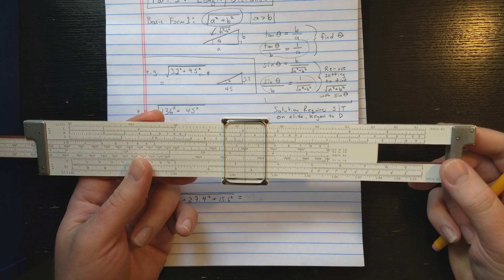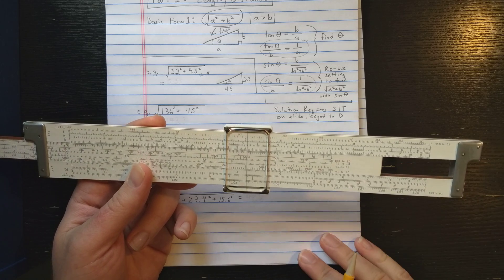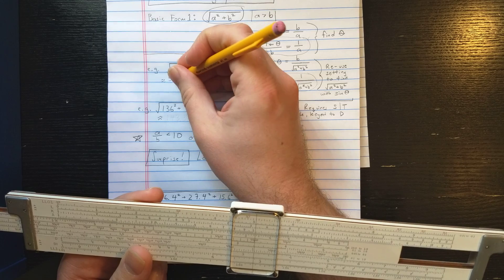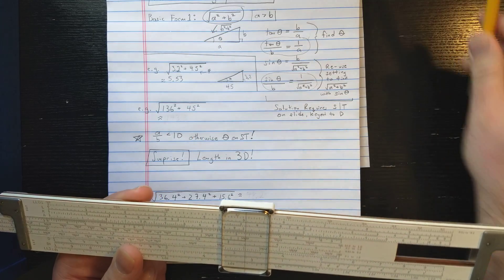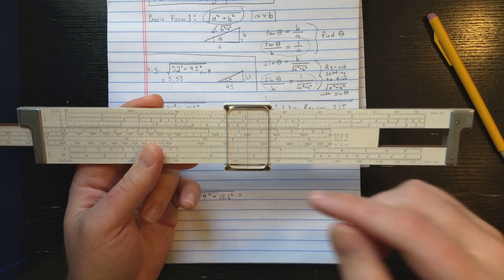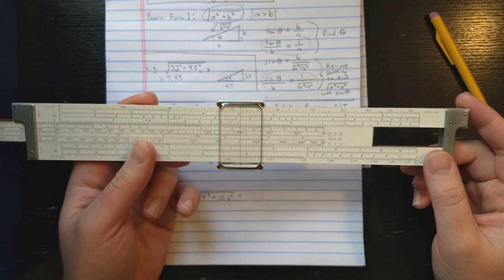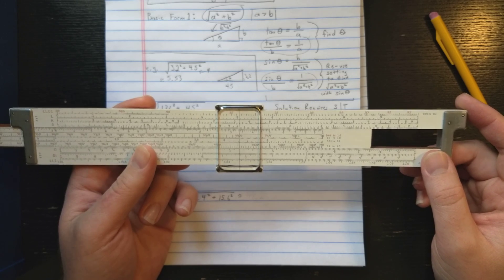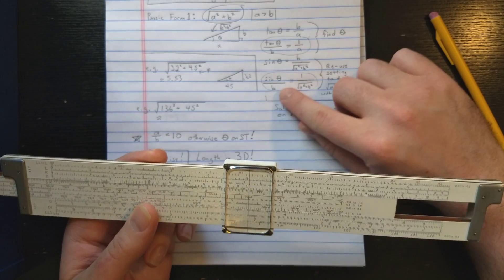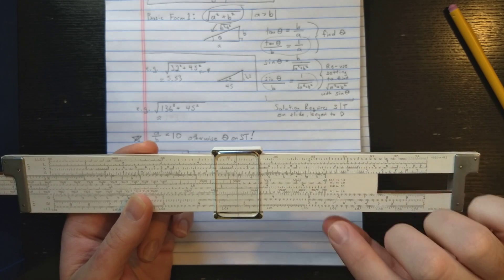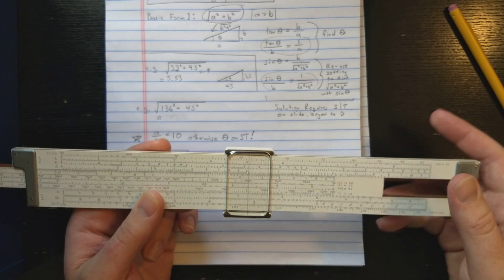And then I'm going to read the result out here on D. That's about 5.53. So again, using the tangent scale to resolve the angle, then you're reusing the hairline position, but moving the slide to use a standard S setting where I've got sine theta over B is 1 over my target, so target read here.